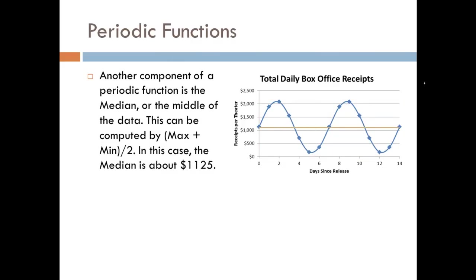Another component of periodic functions is the median, which represents the middle of all of the data. We can easily compute the median. It's the maximum value of the function plus the minimum value divided by two. It's just their average. In this case, the median is about $1,125 per theater.